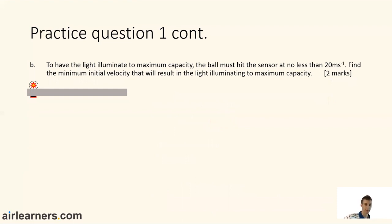Okay, practice question 1B. To have the light illuminate to maximum capacity, the ball must hit the sensor at no less than 20 metres per second. Find the minimum initial velocity that will result in the light illuminating to maximum capacity. Two marks, so you get a couple of minutes to do this question. You can pause the video and come back once you've done the question.